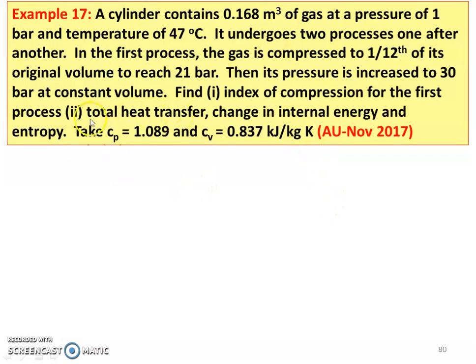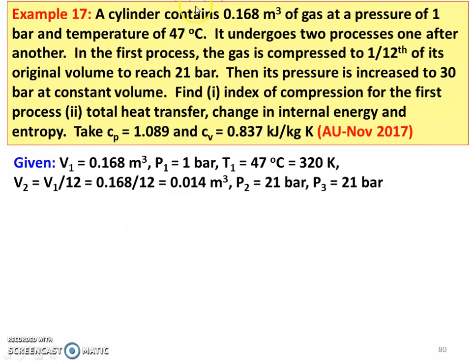We have to write down the given data: V1 equal to 0.168 meter cube, P1 equal to 1 bar, T1 equal to 47 degrees Celsius, which is 320 Kelvin. For the first process, volume V2 equal to V1 by 12, which is 0.168 divided by 12 equal to 0.014 meter cube. P2 equal to 21 bar and P3 equal to 30 bar.